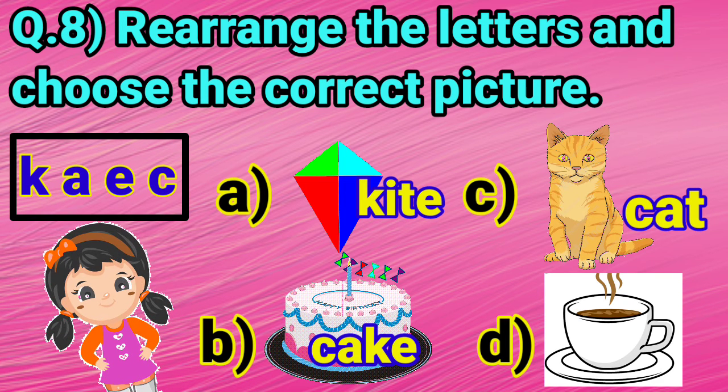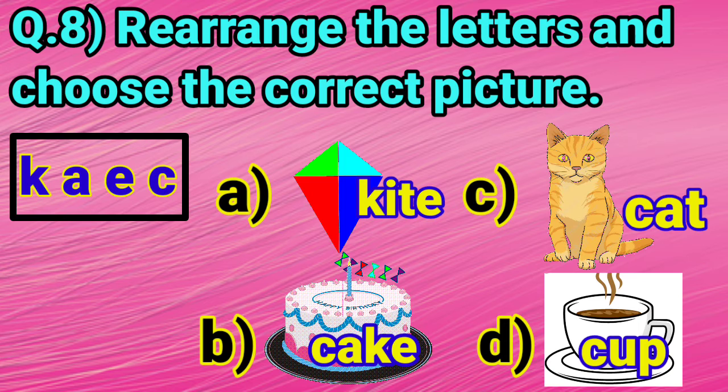Option D is a cup. C, U, P, cup. Dear children, now, let's match these letters with the given options.